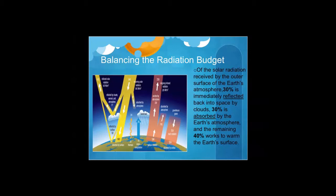Balancing the radiation budget: of the solar radiation received by the outer surface of the Earth's atmosphere, 30 percent is immediately reflected back into space by clouds, 30 percent is absorbed by the Earth's atmosphere, and the remaining 40 percent works to warm the Earth's surface. So overall, 30 percent is immediately reflected while 70 percent is somehow being absorbed. If you look to the left of the screen, you will see a diagram that illustrates the entire radiation process.